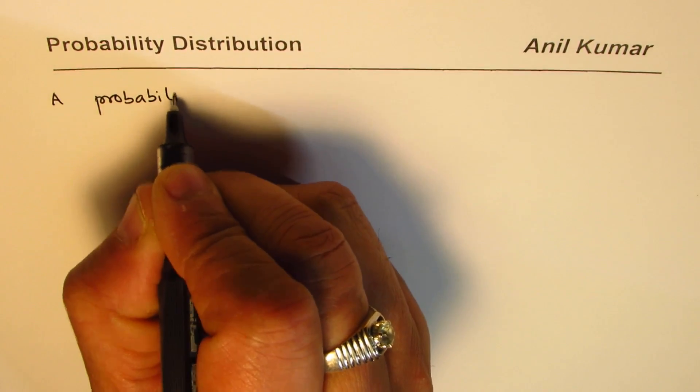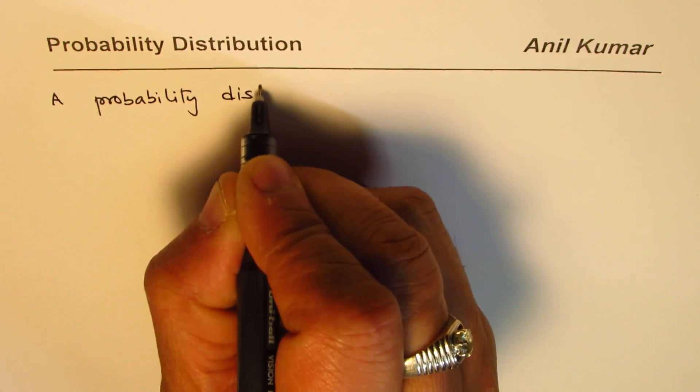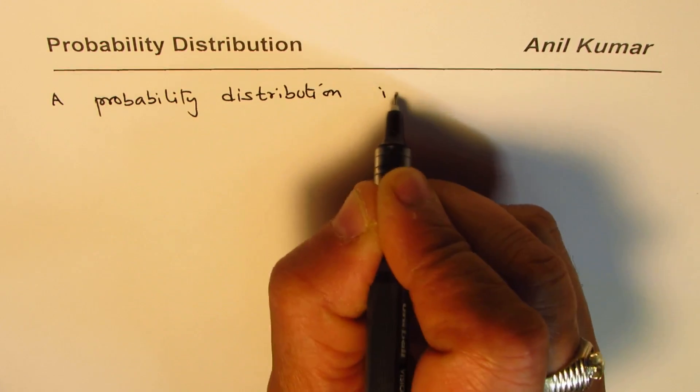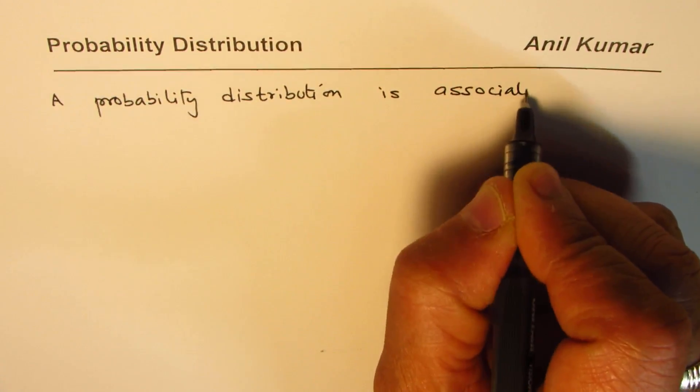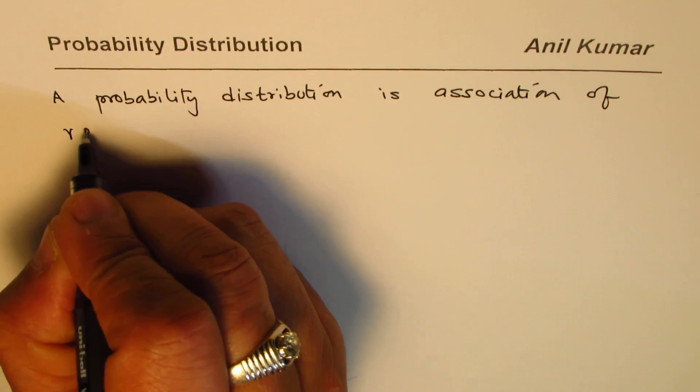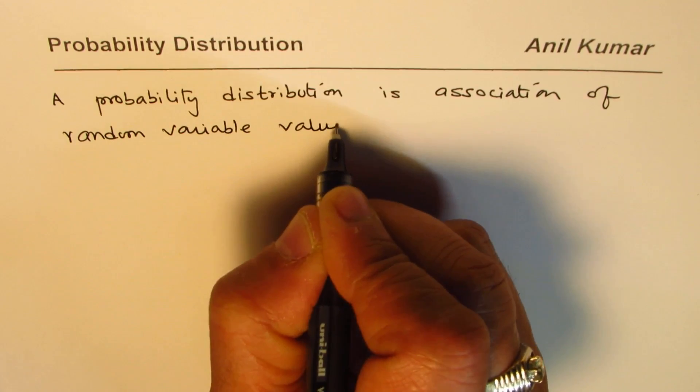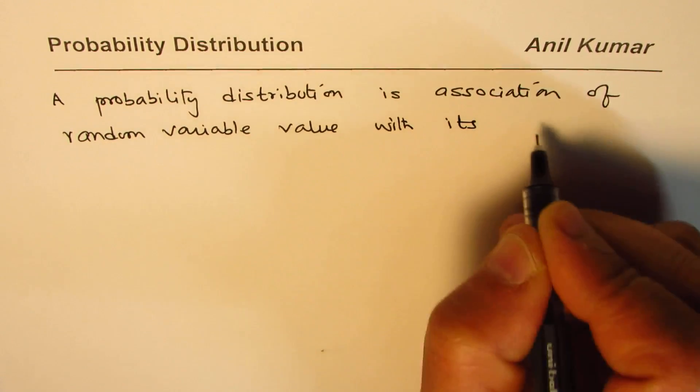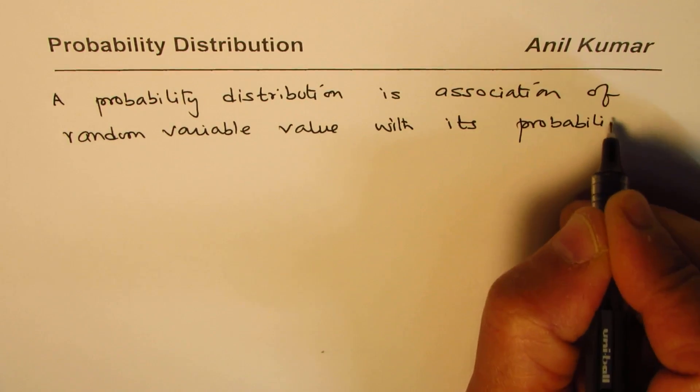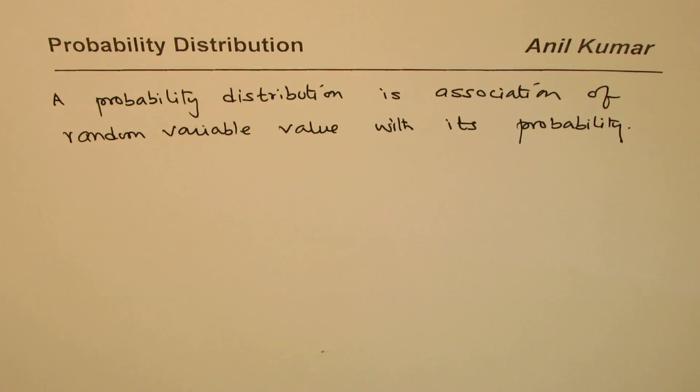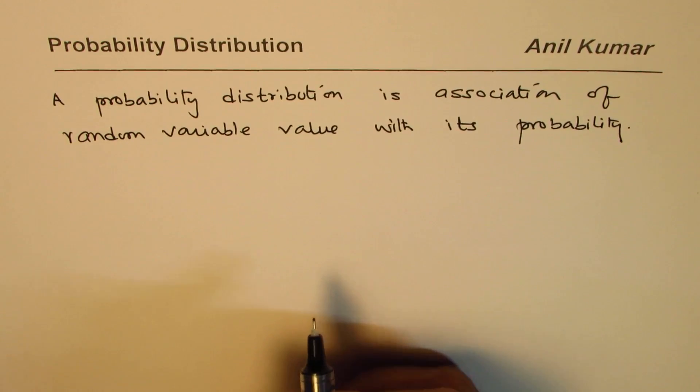A probability distribution is an association of random variable value with its probability. For each value of a random variable, what is the probability of that to happen? That is what probability distribution is.